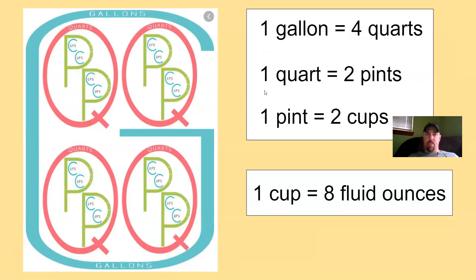Now inside of each one of those quarts are the two princesses, the pints. So you have two Ps inside of each one of the Qs. Those are the pints. And then inside of each pint are the cats the princesses have. So they have two cats. So one pint equals two cups. And I also put up to the side because sometimes in fourth grade they want us to know this, that one cup, one of these little kitty cats is eight fluid ounces. Sometimes they want us to know that.